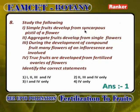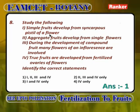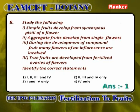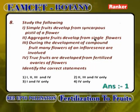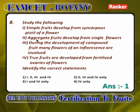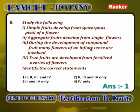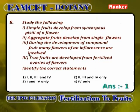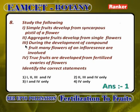Simple fruits develop from syncarpous pistillate flowers. Aggregate fruits develop from a single flower but apocarpous ovary. During development of compound fruit, many flowers of an inflorescence are involved — the total inflorescence is converted into fruit. True fruits are developed from fertilized ovaries of a flower. All four statements are correct.